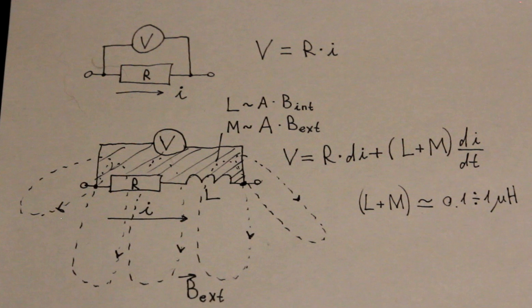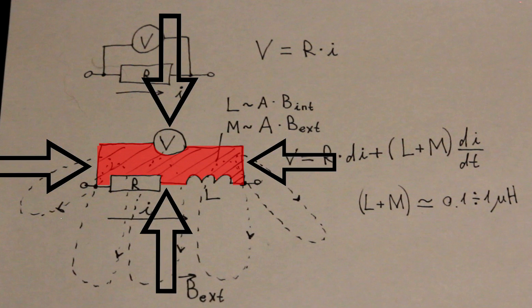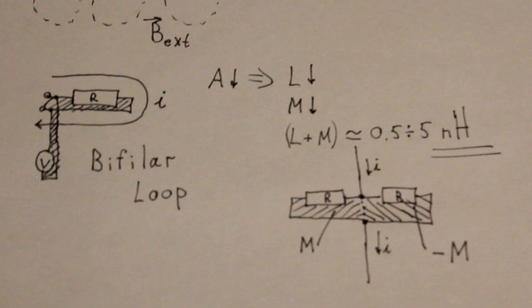Luckily, the trick that we need was invented more than a hundred years ago. L and M both are proportional to the area of our loop, so if we shrink it and squeeze its sides together, we will get a so-called bifilar loop. The area of such loop can be very small, so the inductive component can become negligible.